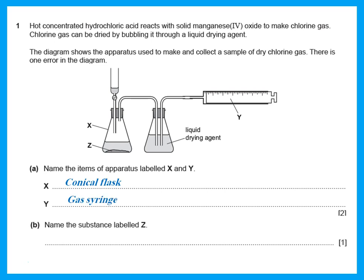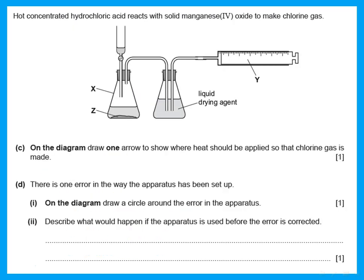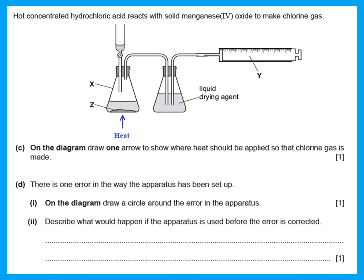Name the substance labeled Z. Looking at the question, he was adding hot concentrated hydrochloric acid to solid manganese oxide, so Z is obviously the solid reactant — that would be manganese oxide. Then he says on the diagram draw one arrow to show where heat should be applied. He wanted hot concentrated hydrochloric acid to react with solid manganese oxide, so remember: heat the flask doing the reaction, not the other flask.